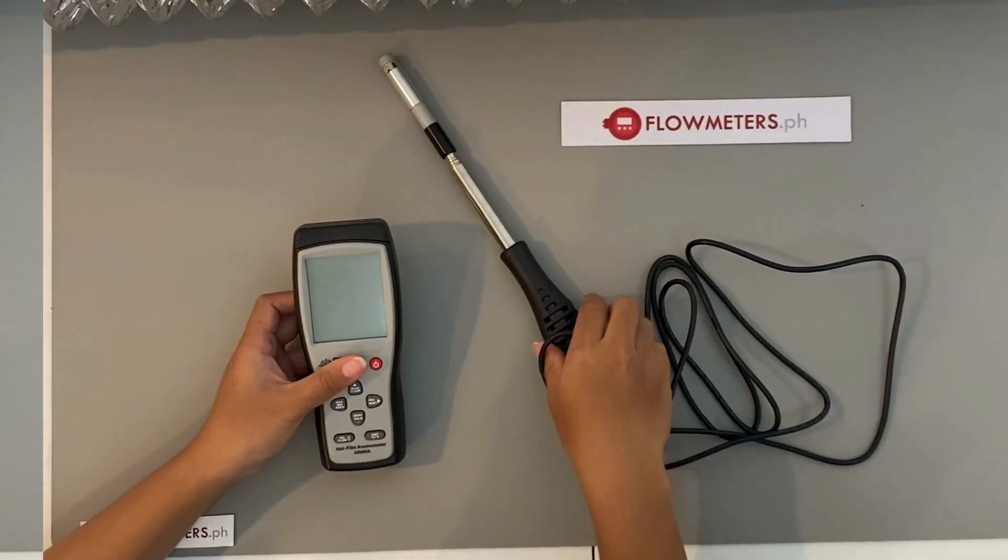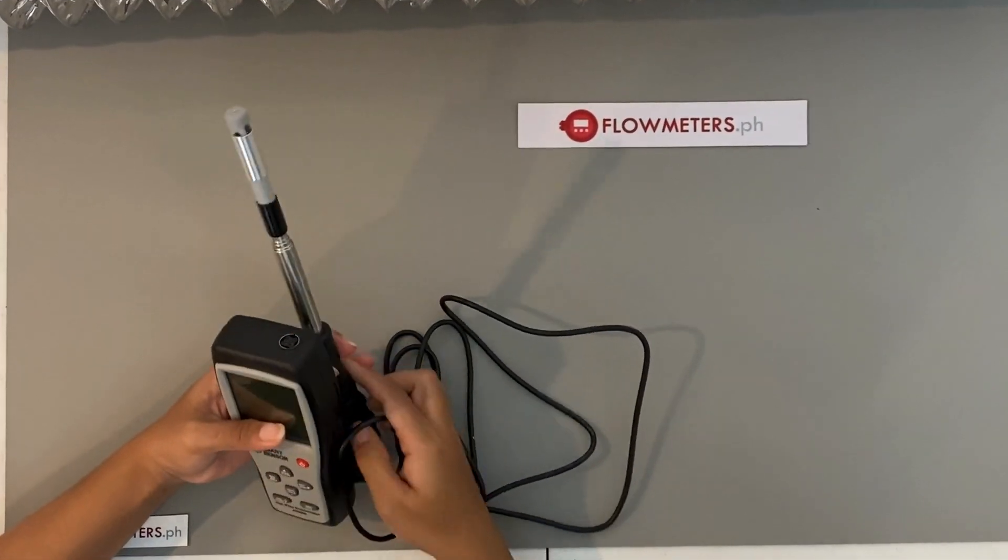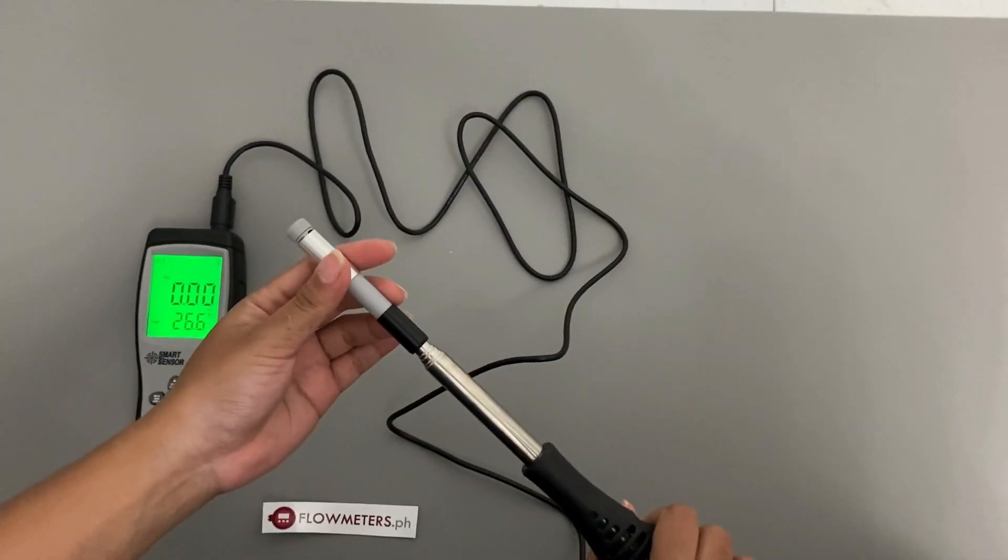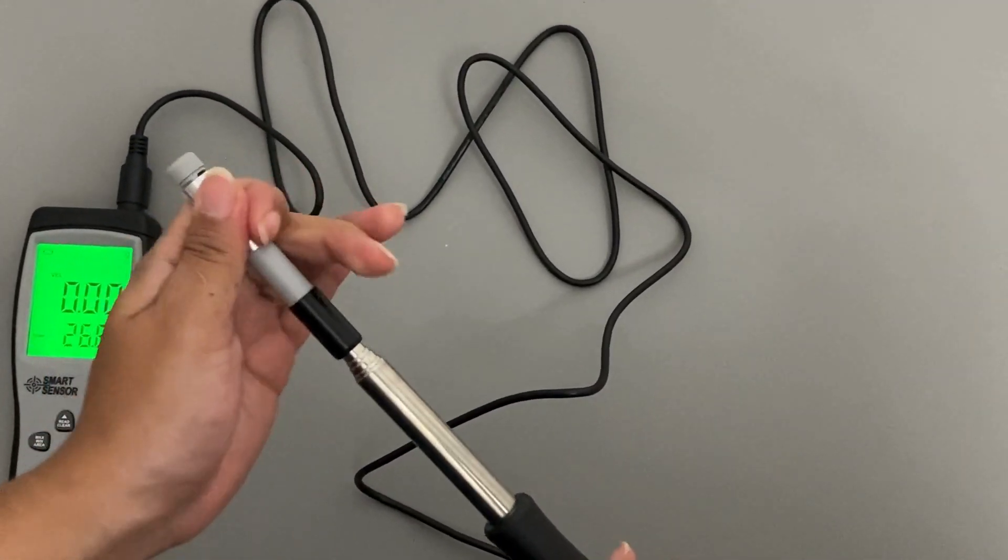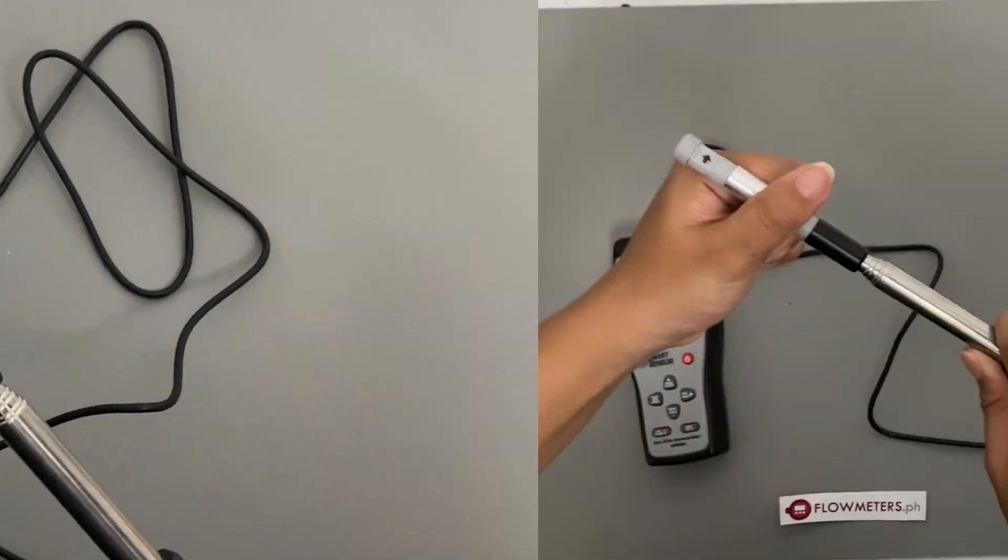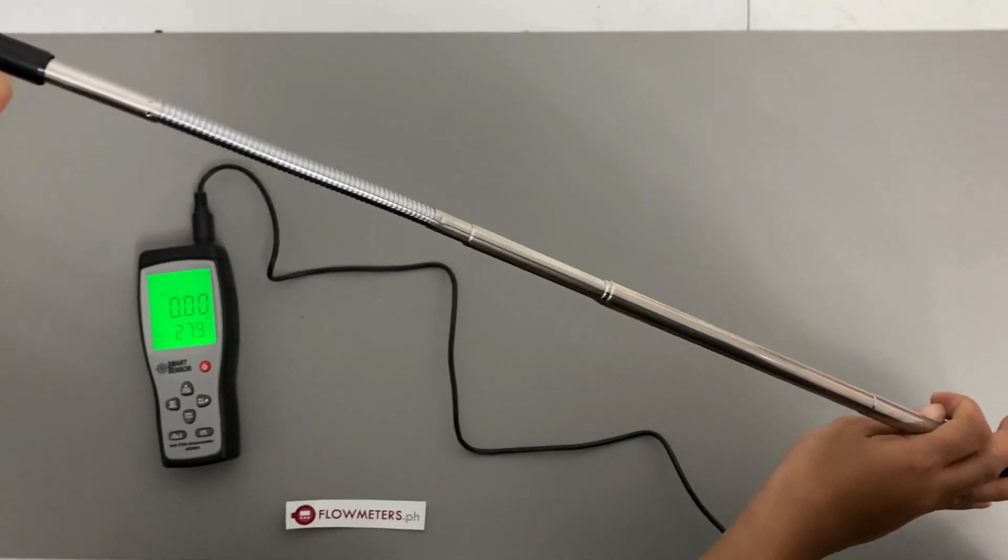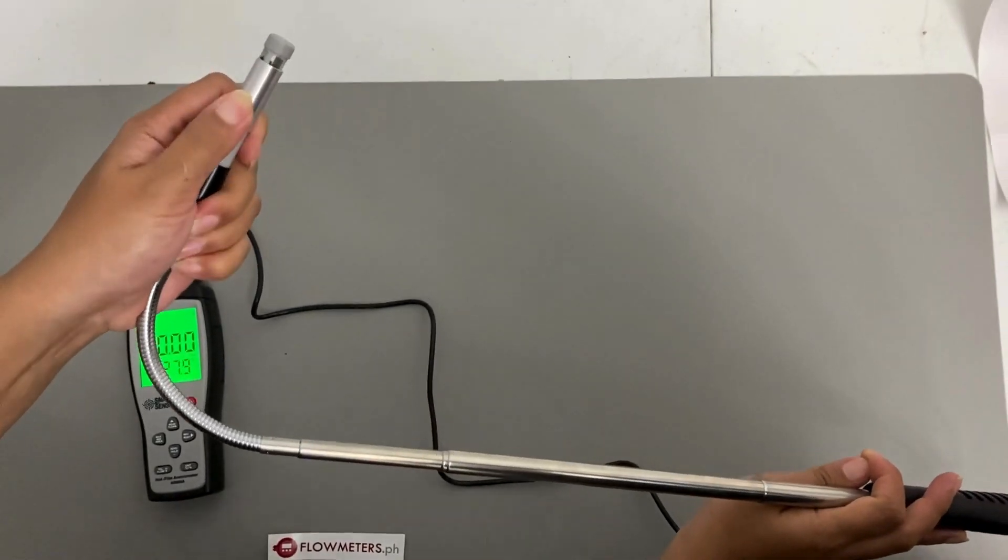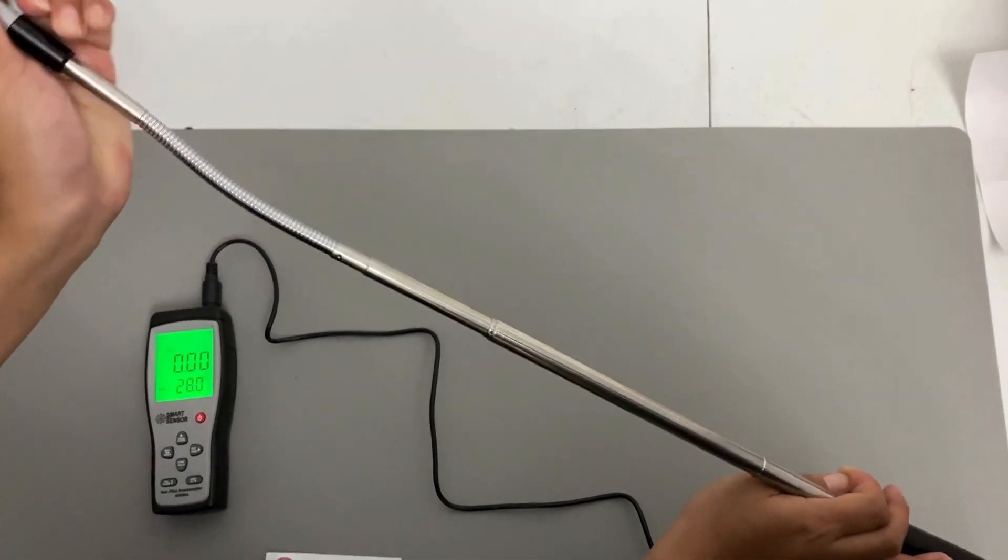Next, insert the sensor probe into the device jack. This probe includes a sensor for airflow or velocity and a thermistor to measure temperature. One of the advantages of this probe is its flexibility. It can be extended and bent, making it easy to reach ducts and other hard-to-access areas.